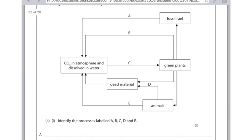Looking at arrow B, it's going from green plants to CO2 in the atmosphere. So at this point, the green plants are releasing CO2, and how they do that is by respiration. So that's B.